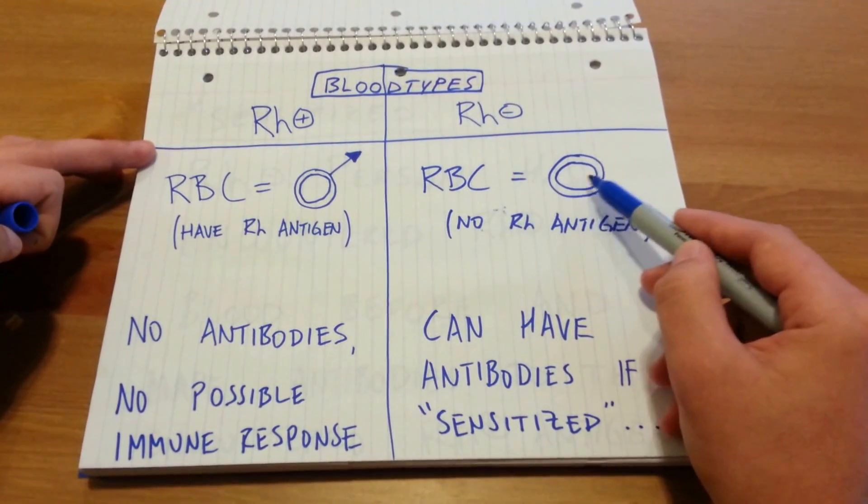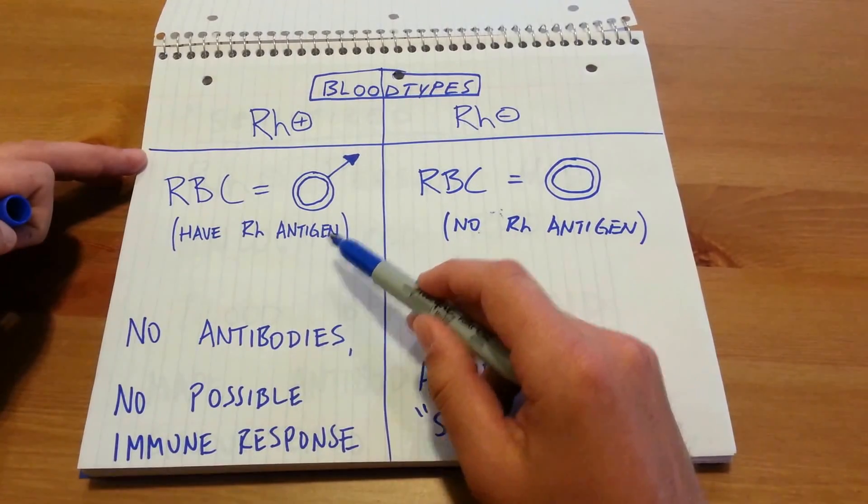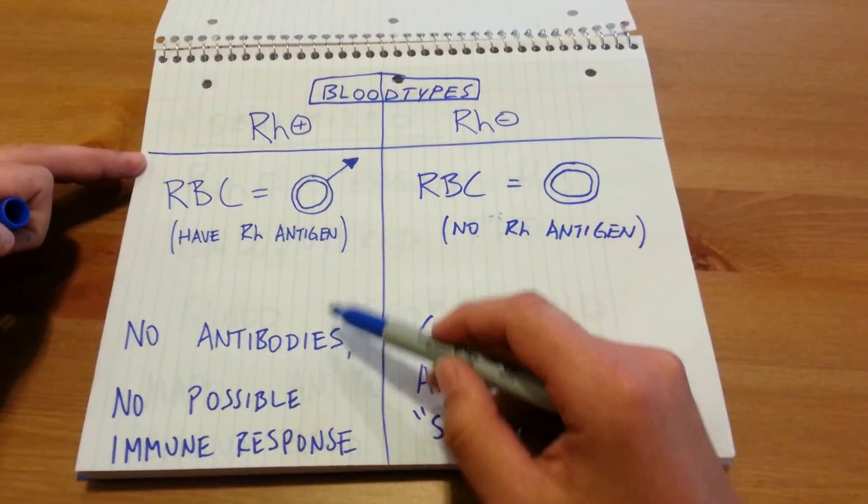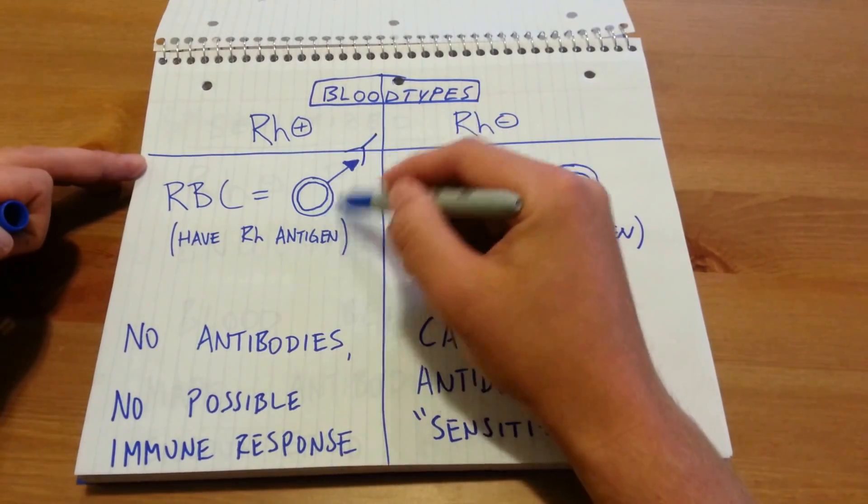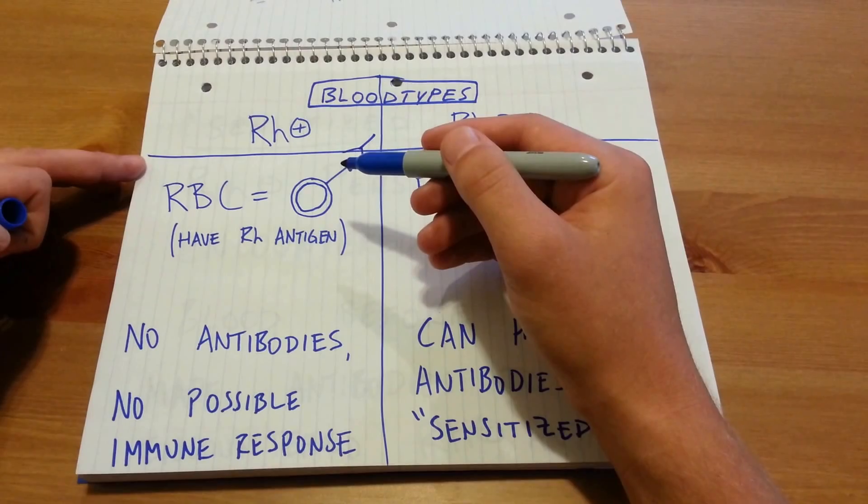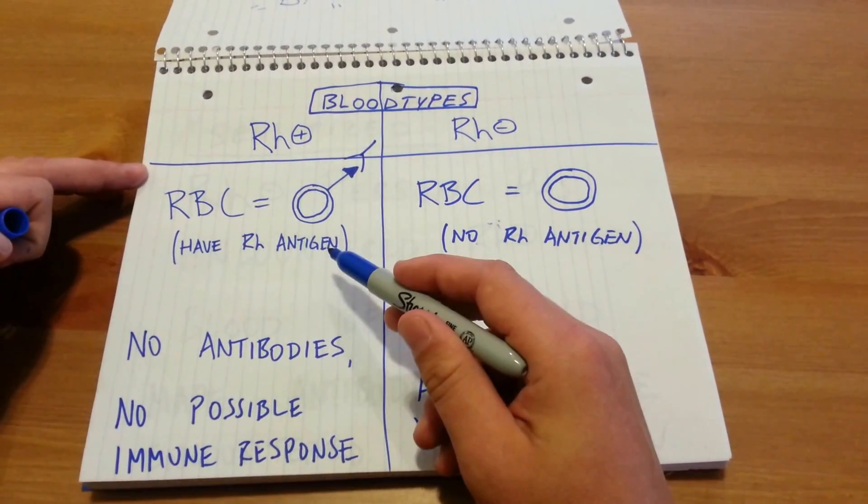RH negative red blood cells do not have the antigen. Now, in the bloodstream of RH positive individuals, they don't have any Rho antibodies. Because if they did, their own antibodies would bind to their own blood, which you don't want to have your immune system recognizing your own blood as foreign. So there's going to be no antibodies and no possible immune response to your own blood.